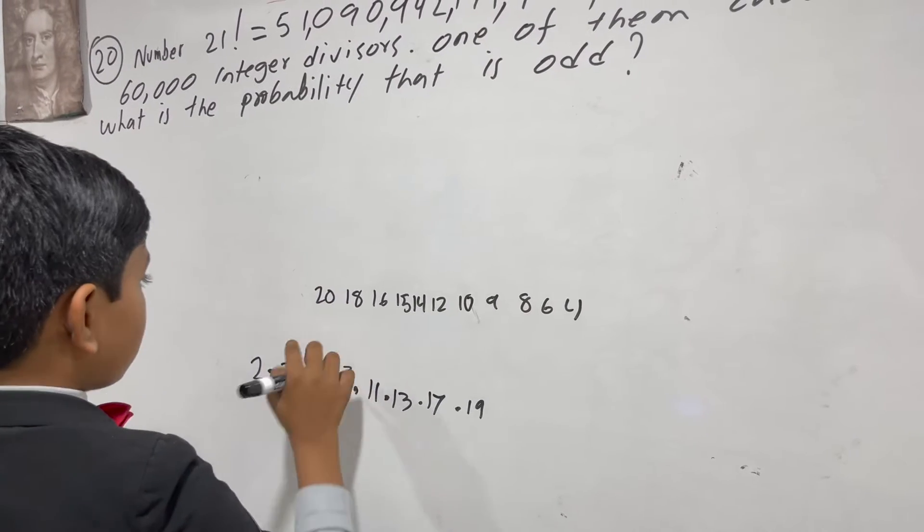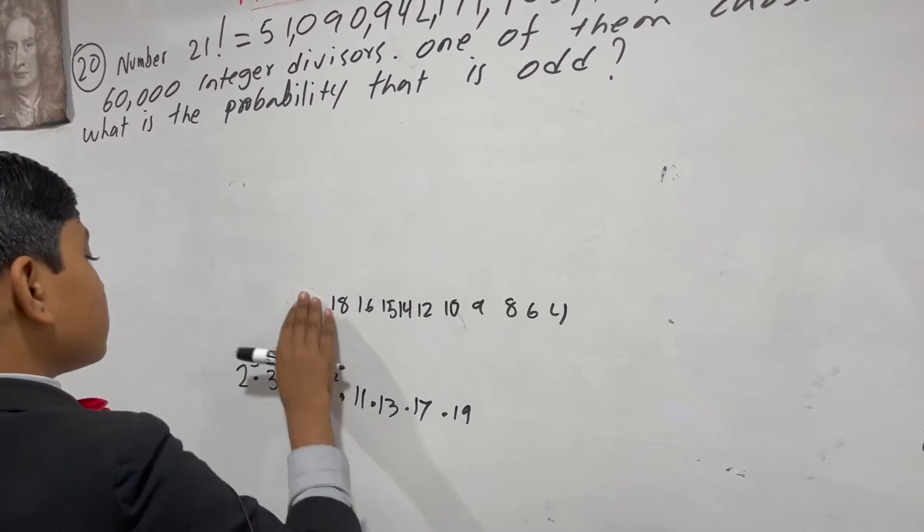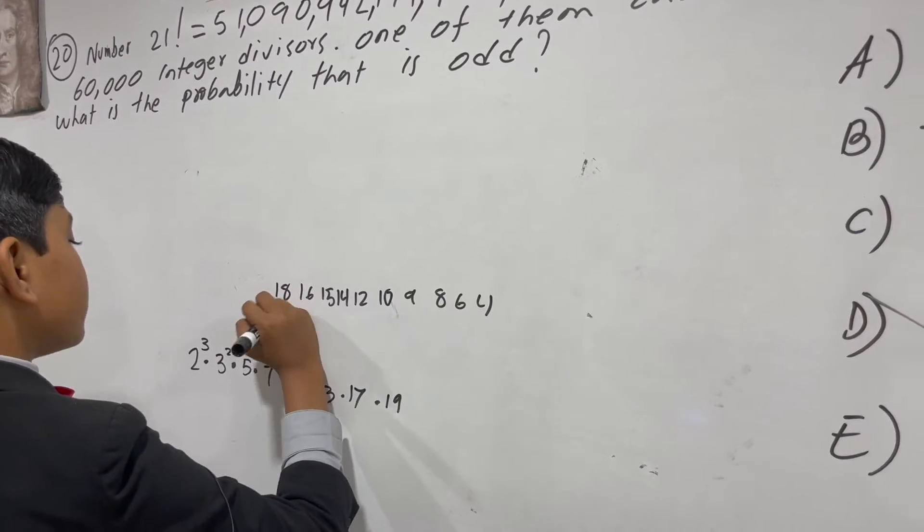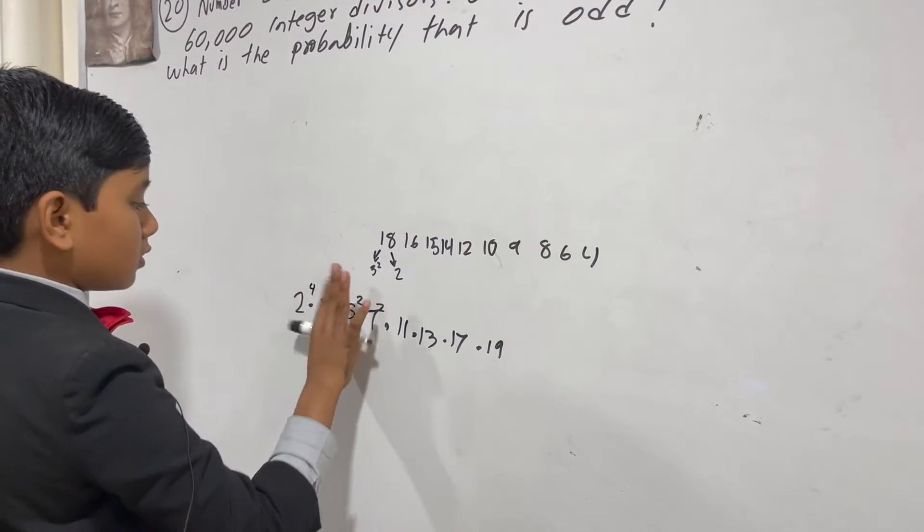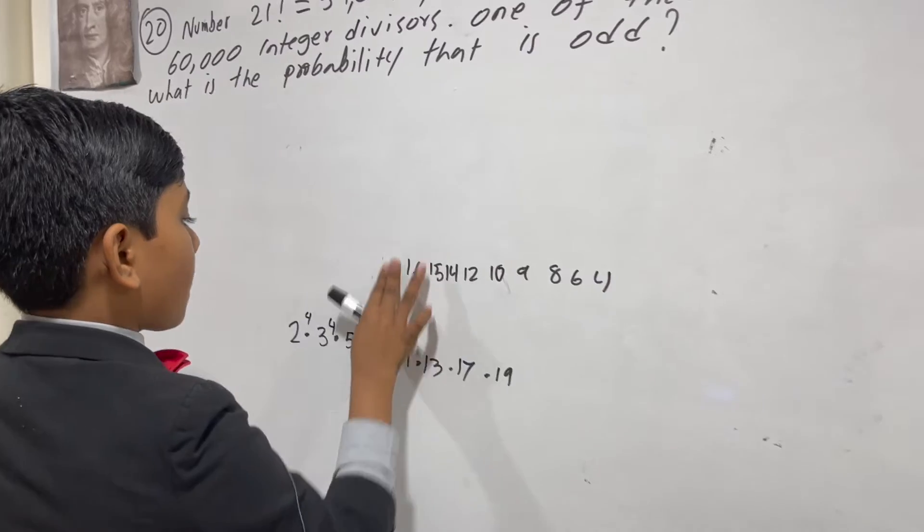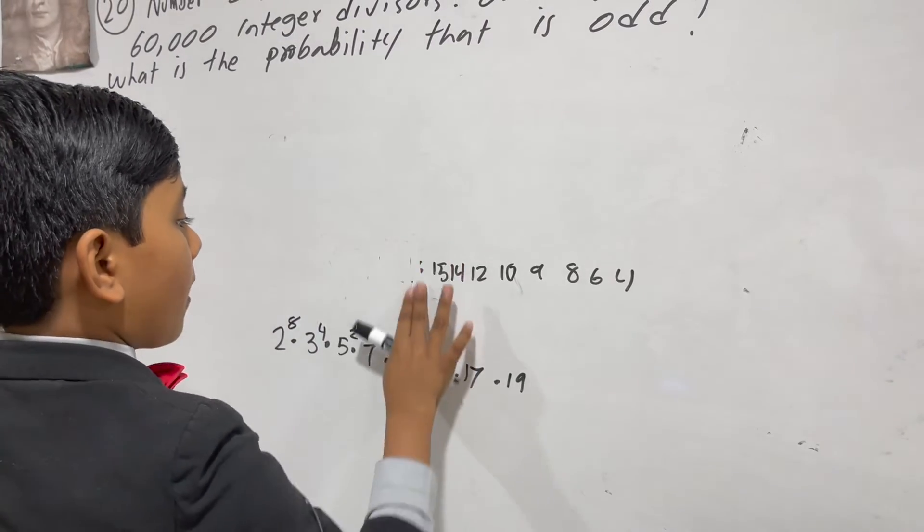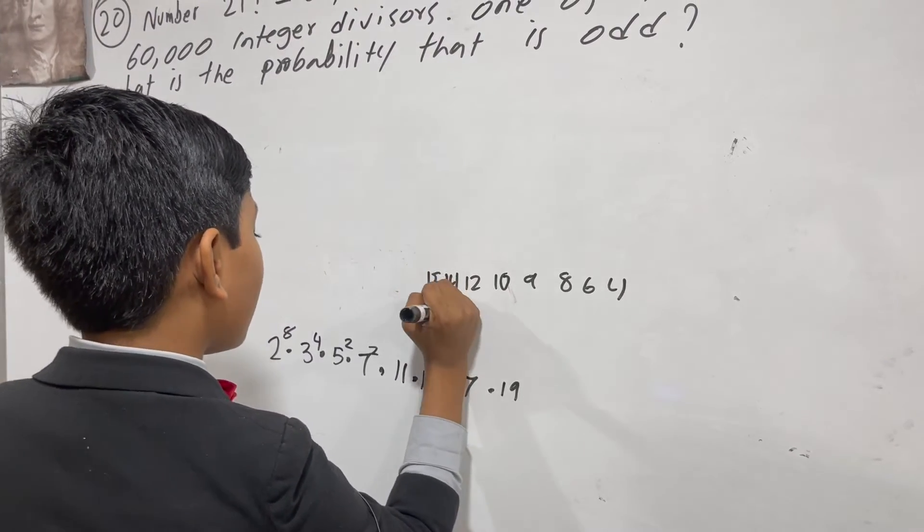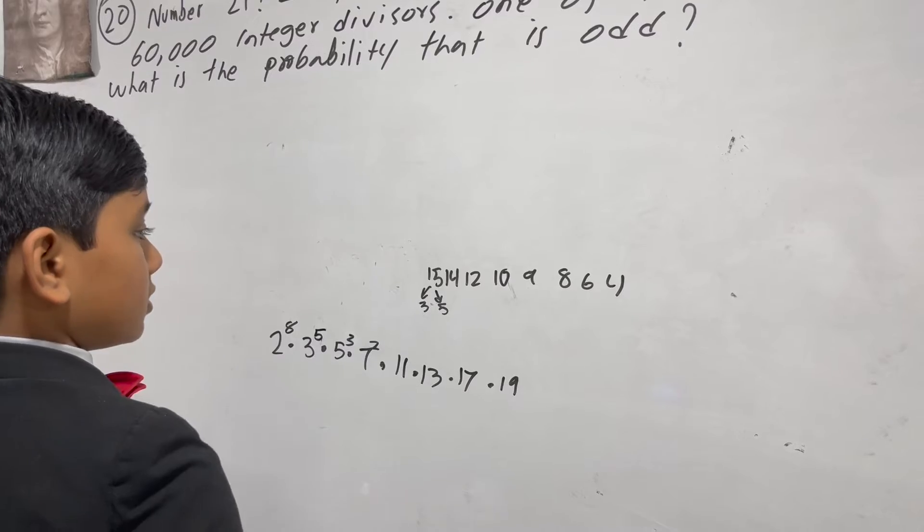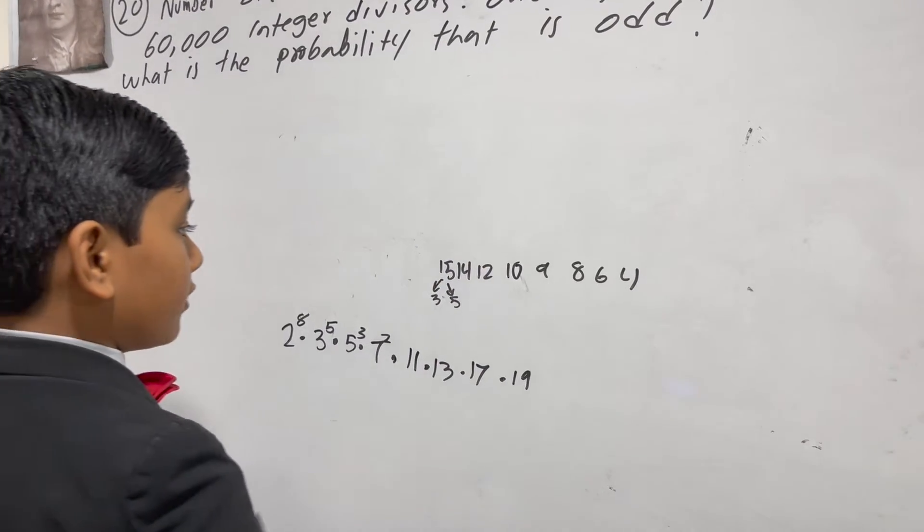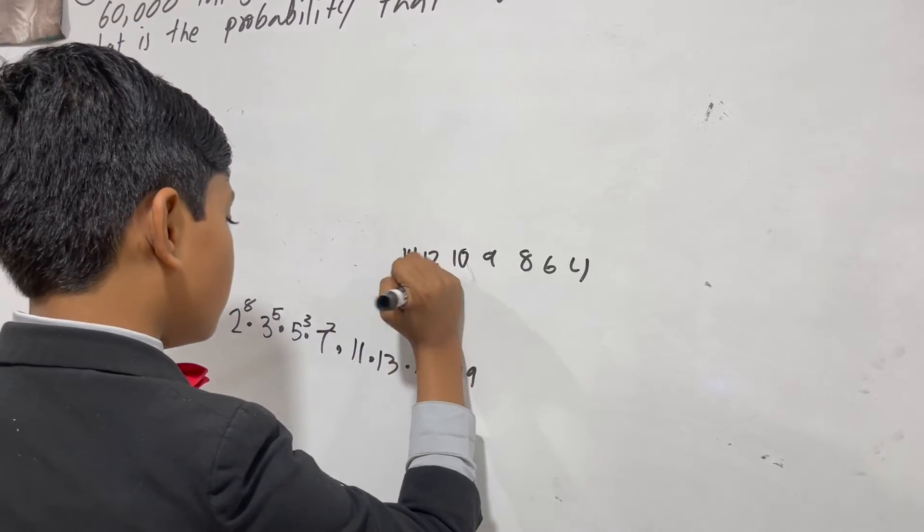Now what about 20? That's 5 and 2 squared. 18 is 3 squared and 2. 16 is 2 to the fourth. 15 is 3 and 5. 14 is 2 and 7.